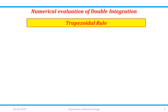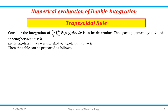The first method is the trapezoidal rule. Consider the integration ∫(y0 to yn) ∫(x0 to xn) f(x,y) dx dy to be determined. Let us assume that the spacing between y, from y0 to yn, is divided by k, and the spacing between x, from x0 to xn, is divided by h.